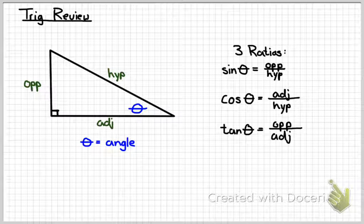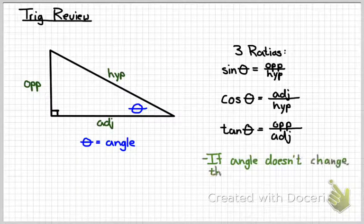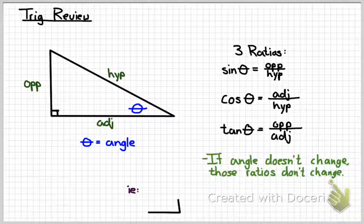So those are just the three different ways that you can arrange the three sides of your right triangle. And the cool thing is that if those angles don't change, then those ratios are always the same.